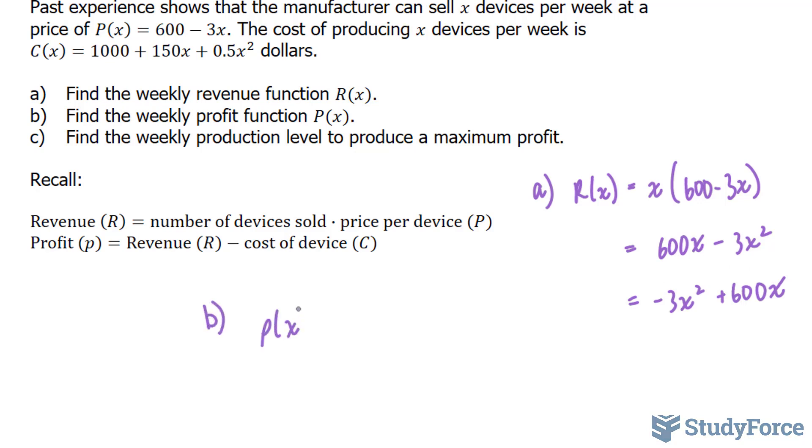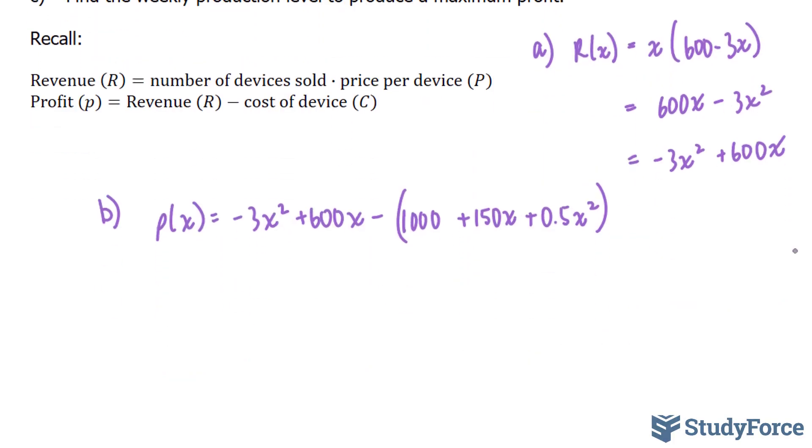So for part B, little p(x) is equal to -3x squared plus 600x minus this equation, 1,000 plus 150x plus 0.5x squared. And make sure that you put this function in brackets, because had you not put it in brackets, then this negative on the outside wouldn't have influenced those terms. So we end up with -3x squared plus 600x. That part doesn't change. Minus 1,000 minus 150x and minus 0.5x squared.